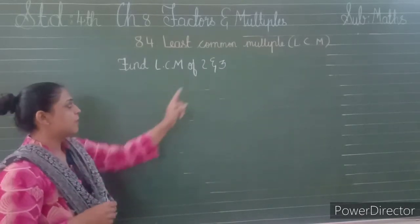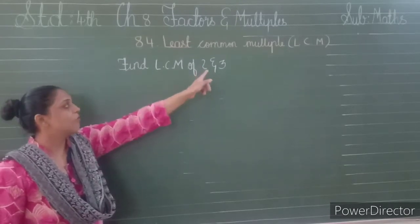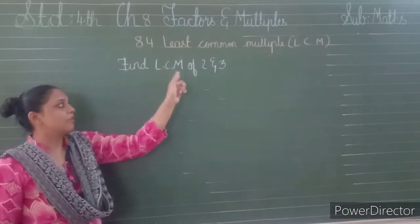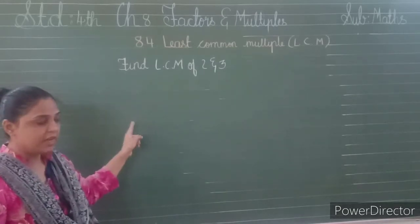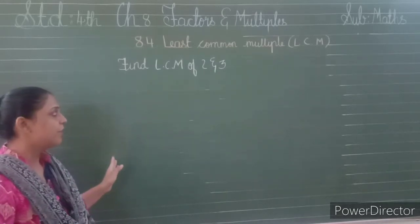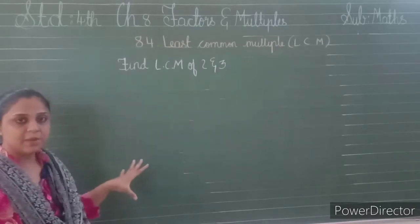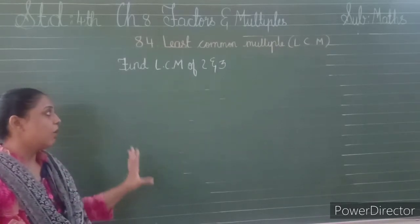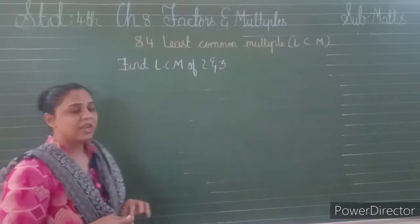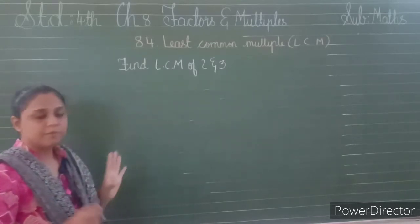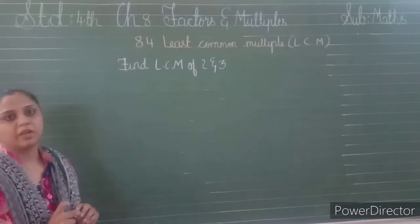Again I am revising: sabse pehle hume kya karna hai? Find out the LCM of 2 and 3, yane ke hume least common multiple 2 and 3 ka find out karna hai. Pehle hum 2 ke multiples find out karenge, phir 3 ke multiples. Dono mein jo common multiples honge unhe find out karenge, aur uske baad sabse chota number, jo least common multiple hoga, wo find out karenge.